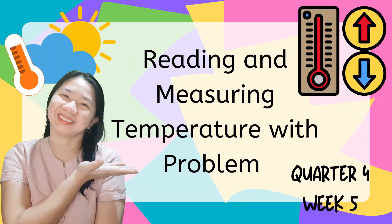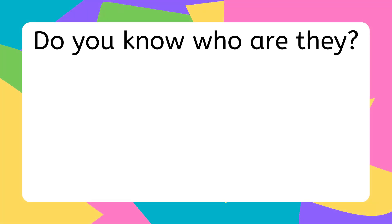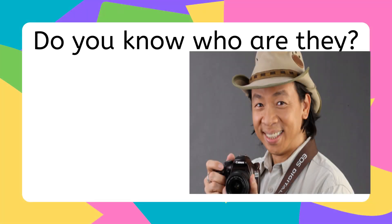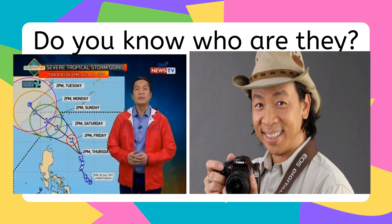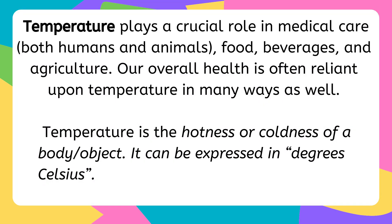Magandang araw mga bata! So, ngayon tayo ay nasa week 5 ng quarter 4 at pag-uusapan natin ang how to read and measure temperature with a thermometer. Kilala niyo ba yung nasa larawan? Ang unang nasa larawan ay si Kuya Kim, at ang pangalawa naman ay si Mang Tani. Ano ba yung ginagawa nila? Si Kuya Kim at si Mang Tani ay nagbibigay ng informasyon tungkol sa weather forecast na ating naririnig araw-araw. Maaaring malamig, mainit ngayon at sa mga sumusunod na araw.